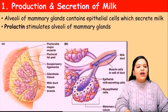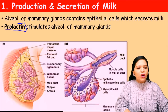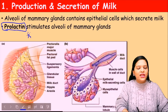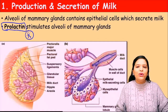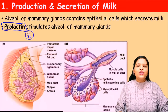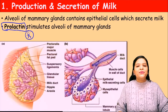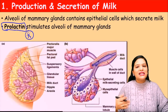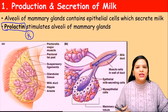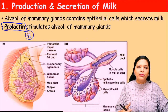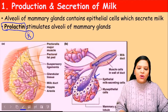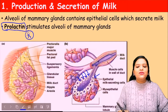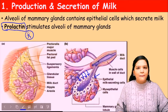An important hormone called prolactin is involved. Prolactin is very important. Prolactin hormone stimulates the alveoli of the mammary glands. Who secretes prolactin? The hypothalamus gives signals to the pituitary, and the pituitary secretes the hormone prolactin. This prolactin comes and acts on the alveoli, giving signals to the epithelial cells to secrete the milk.